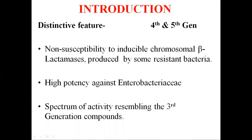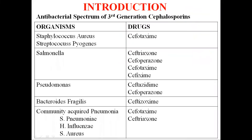The 4th generation cephalosporins have a spectrum of activity resembling the 3rd generation compounds. The 3rd generation cephalosporins are effective against a variety of gram-positive and gram-negative organisms including staphylococci, streptococci, meningococci, gonococci, enterococci, Enterobacteriaceae, H. influenzae, and Pseudomonas. The 4th generation also has good activity against Pseudomonas aeruginosa, Staphylococcus aureus, and Enterobacteriaceae.